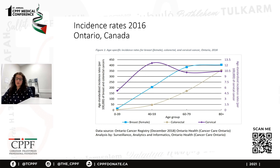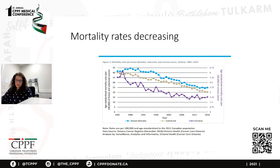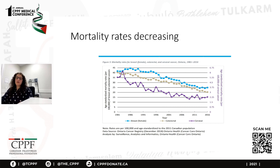For cervical cancer, the incidence rate was actually highest in ages 40 to 59. Since 1992, the age-standardized incidence rate of female breast cancers in Ontario has been steadily decreasing. The ASIR for colorectal cancer decreased between 2008 and 2016, and cervical cancer incidence also decreased from 1981 to 2016. There was also a decrease in mortality rates for breast, colorectal, and cervical cancers overall, thought to be due to the introduction of screening.